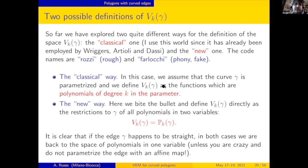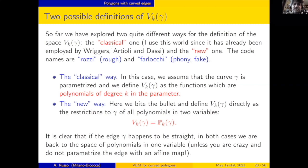We have explored two different approaches. I will call the first one the classical one — not because it's really classical, but because it has already been employed, as we saw in the talks of Peter Riegers, Eduardo Artioli, and Franco Dasi. The new one I will describe shortly. We have code names: the first one we call it Rozzi, meaning rough, because polynomials are not inside, so the method is very rough. The other one we call it Farlocco, which means phony or fake, since at the beginning we didn't believe it was going to work.